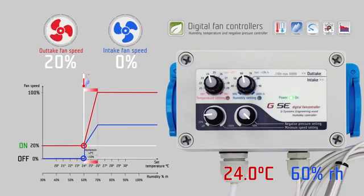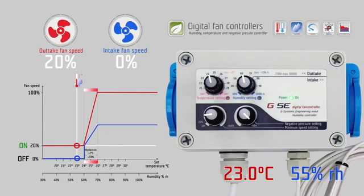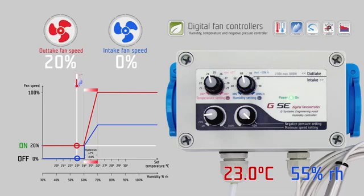Once the temperature and humidity are below their set values, the intake fan switches off, while the outtake fan runs on its set minimum speed setting. Between temperature and humidity, the stronger signal is always the one which commands the fans.